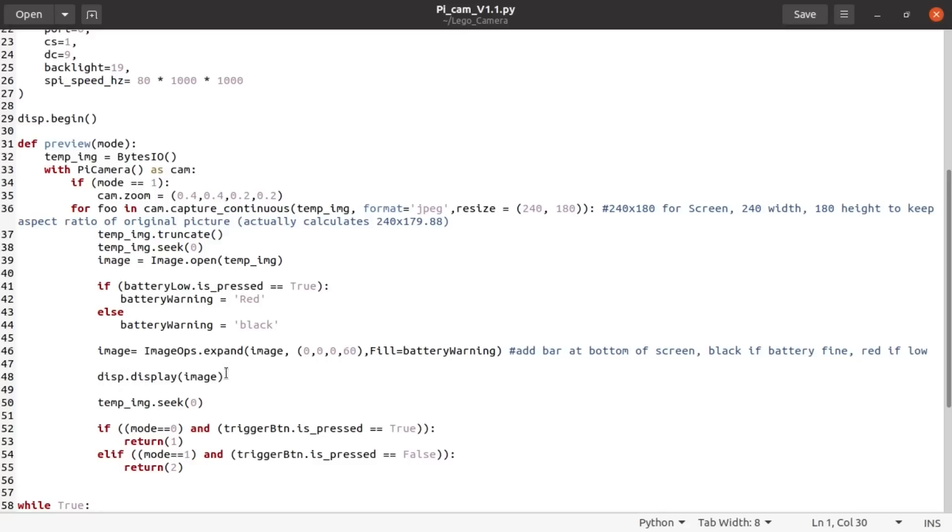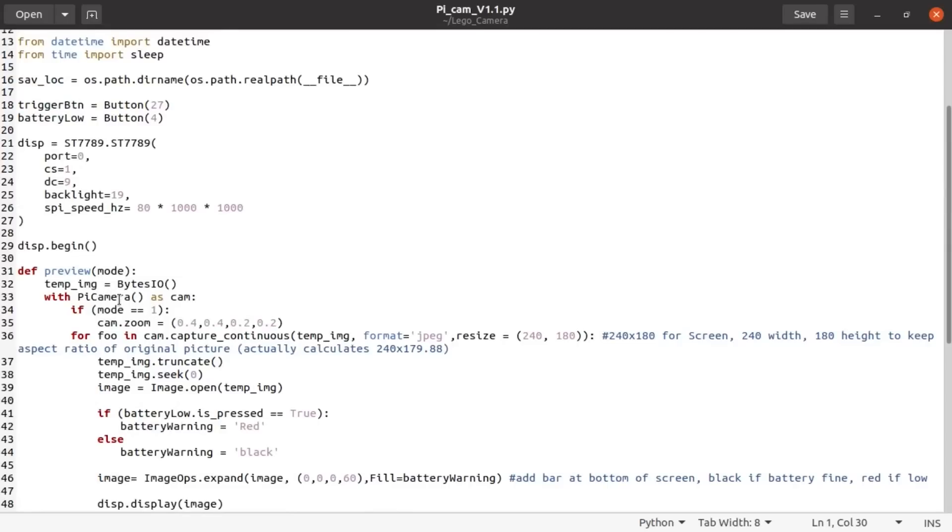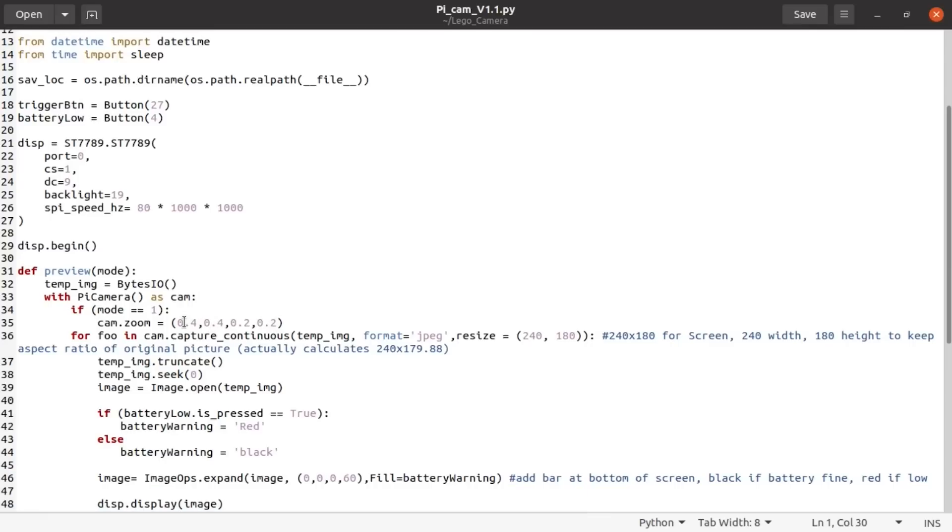It's then going to display that on the LCD. And then if it was in mode 0 which is what we entered in, if the trigger button's pressed it will return 1. But if we haven't pressed that yet it will just keep updating the LCD with what the current picture would be. If we press the trigger button to take a photo and it returns with a 1 it will then re-enter preview in mode 1. Which means it's doing all the same but it's setting the camera zoom to the very centre of the screen. So this will show us on the LCD the very middle of what we're looking at. Because the lens has got to be manually focused this means you can get a really precise focus on the centre.